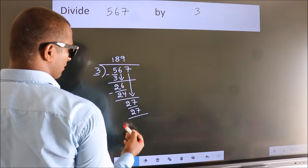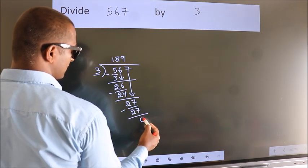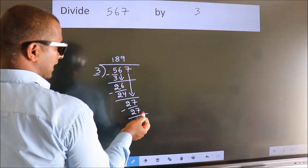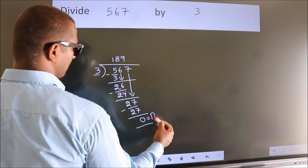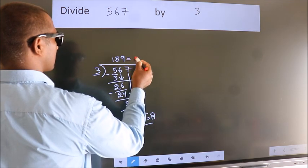Now we subtract. We get 0. No more numbers to bring it down. So we stop here. This is our remainder. This is our quotient.